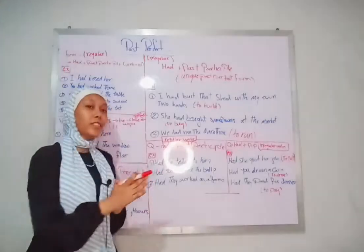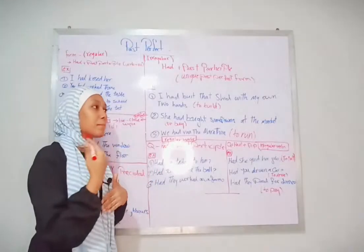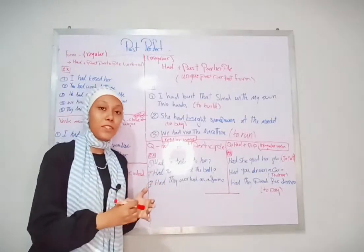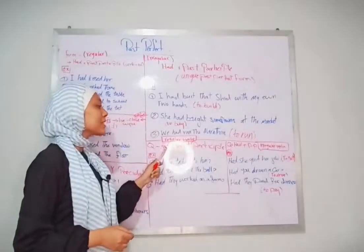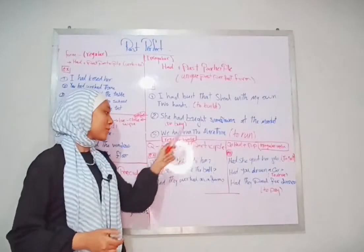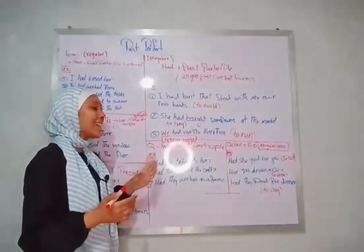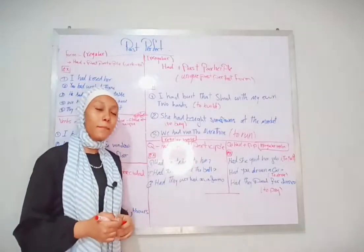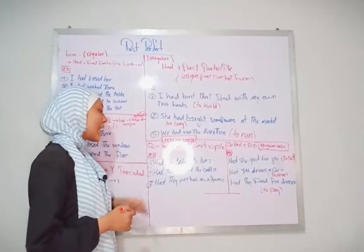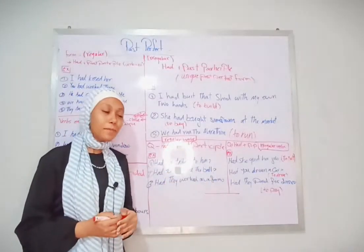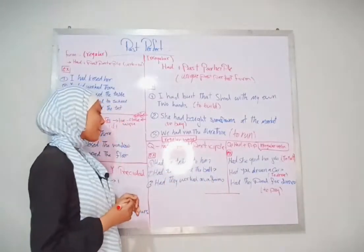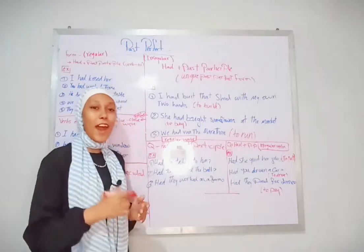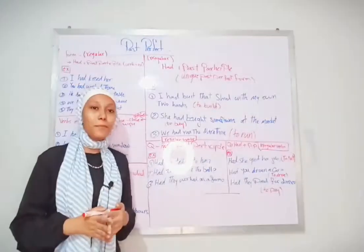Now, how do we make a question in the past perfect? The structure is: had plus subject plus past participle. Examples with regular verbs: Had she talked to him? Had you kicked the ball? Had they worked on a farm?